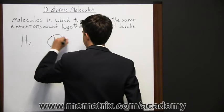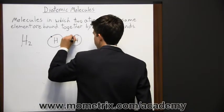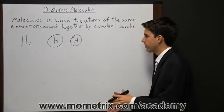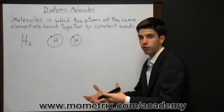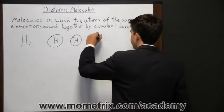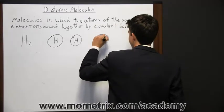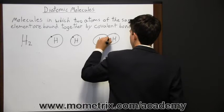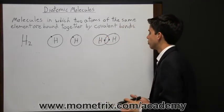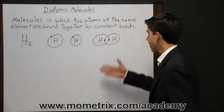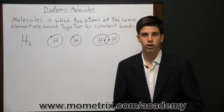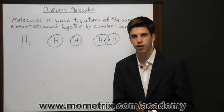Since each hydrogen atom needs one valence electron to fill its outer shell, the two hydrogen atoms combine to share their valence electron with one another. Since a covalent bond is one pair of shared valence electrons, they form a covalent bond. There can be more than one covalent bond in a diatomic molecule.